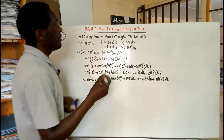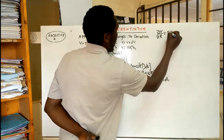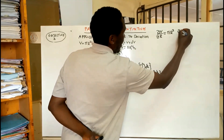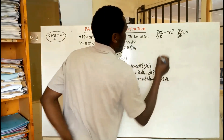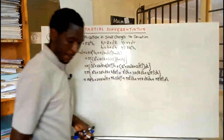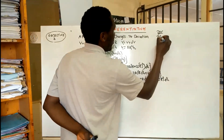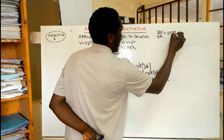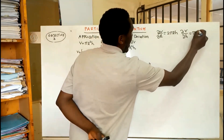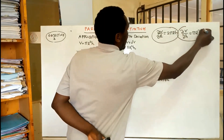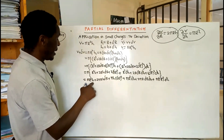There is something interesting here. From a previous lesson we said the partial derivative of V with respect to R is equal to 2 pi RH, and the partial derivative of V with respect to H is equal to pi R squared. We are going to use those two results again in this derivation.